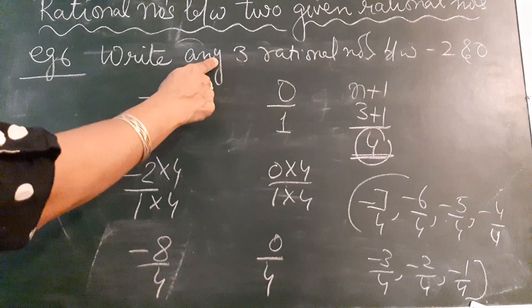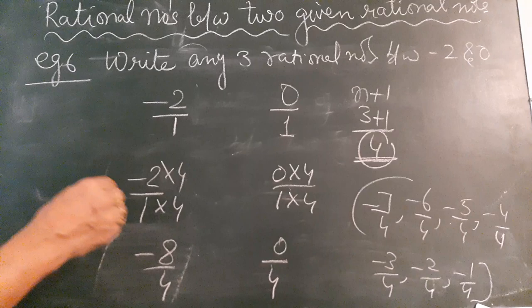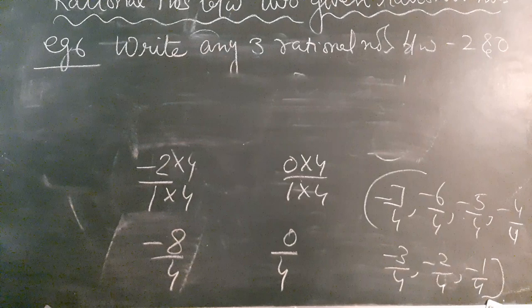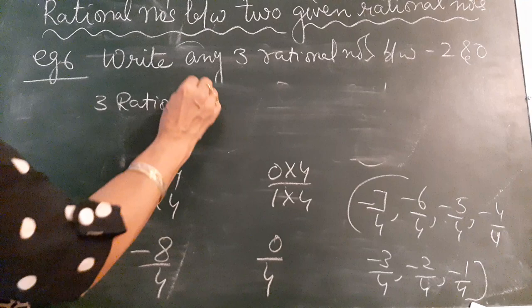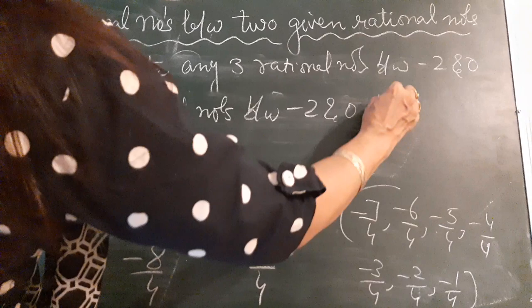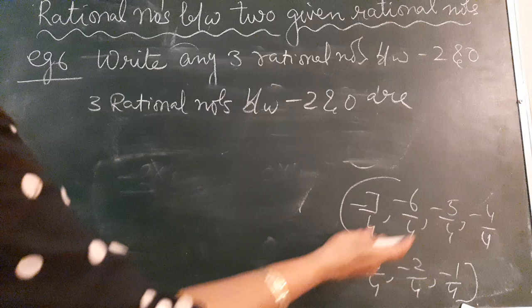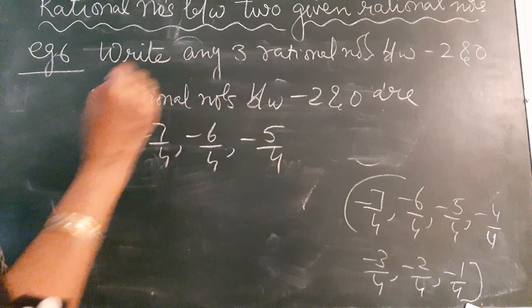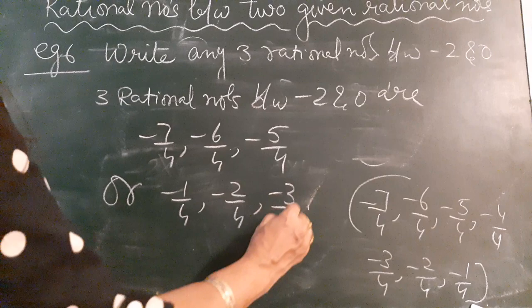But only three are required, so write any three from the list. You can write minus 7/4, minus 6/4, minus 5/4 — or you can write minus 1/4, minus 2/4, minus 3/4. Any three numbers will do.